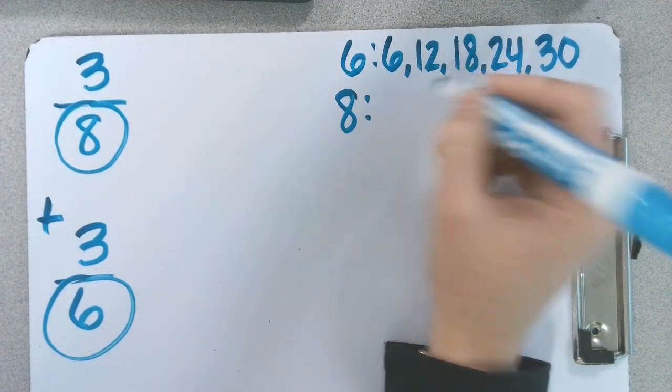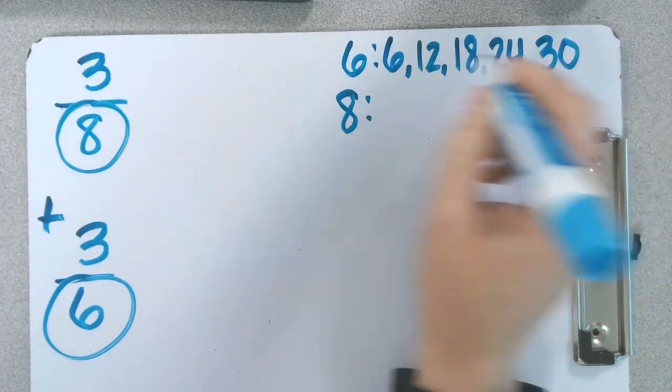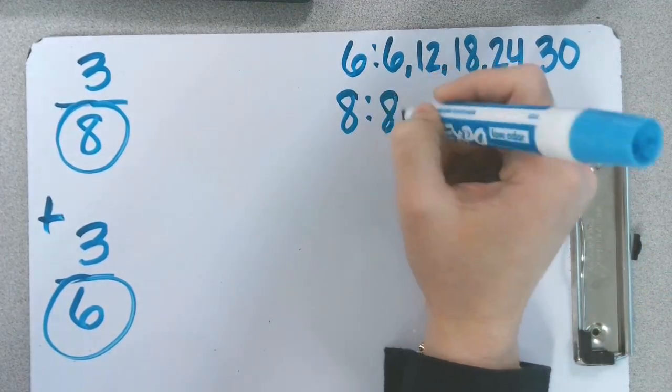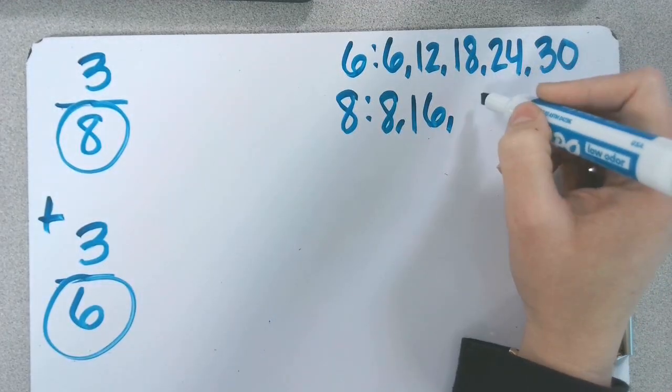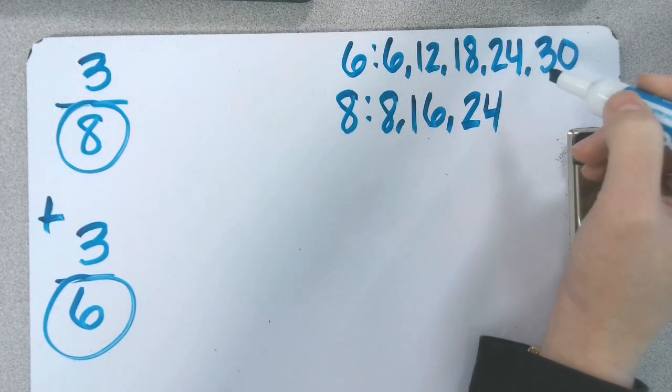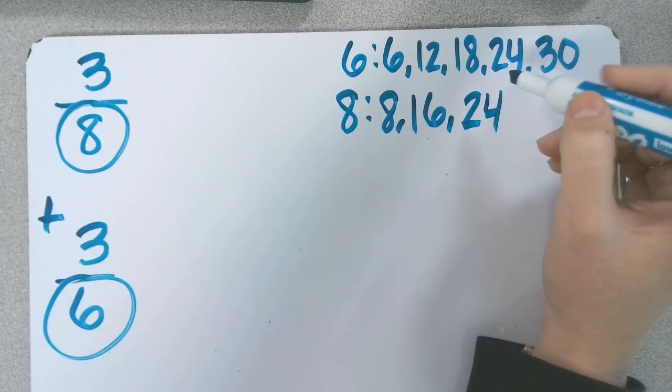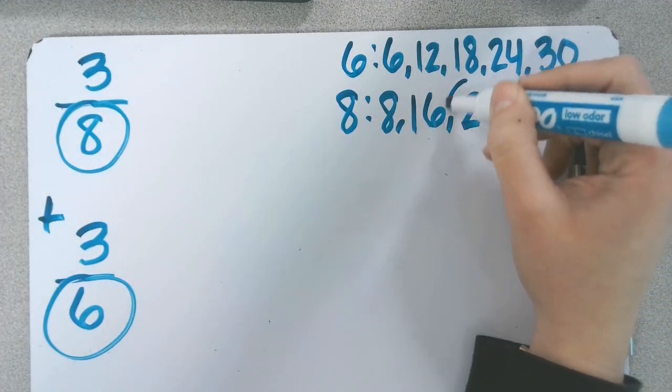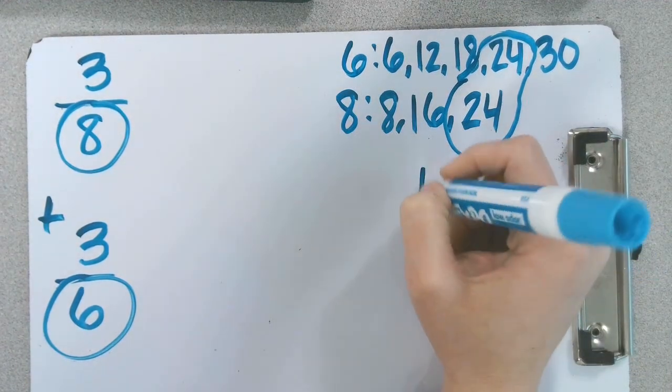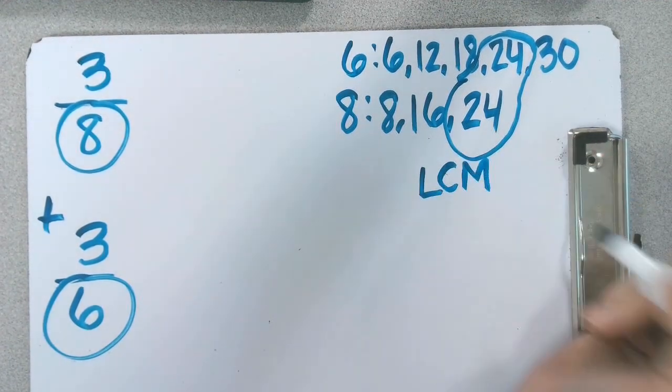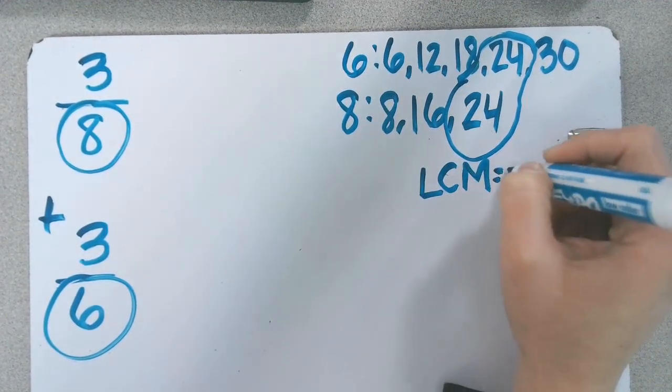Let's skip count for eighths until we find something that's in common with what we already have: 8, 16, 24. Oh, we can stop there, can't we? Let's stop. Circle the one that's in common. That's called our LCM, least common multiple, which is 24.